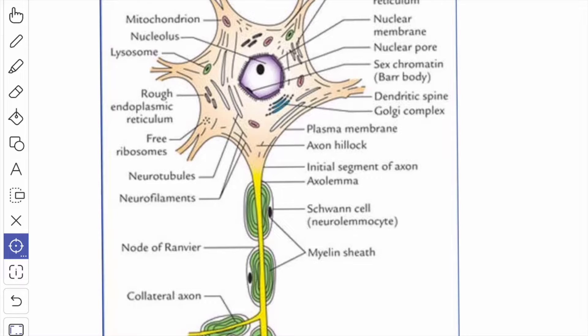The next structure we will see is the neurofilaments. The neurofilaments are arranged in a plexiform manner in the cell body and extend into all the processes. The neurofilaments and the microtubules crowd together at the axon hillock. They act as an internal support of the neurons.